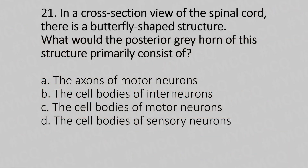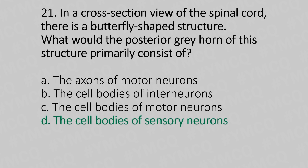In a cross-section view of the spinal cord, there is a butterfly-shaped structure. What would the posterior gray horn of this structure primarily consist of? Option A: the axons of the motor neurons. Option B: the cell bodies of the interneurons. Option C: the cell bodies of the motor neurons. Option D: the cell bodies of the sensory neurons. And the answer is Option D — the cell bodies of the sensory neurons.